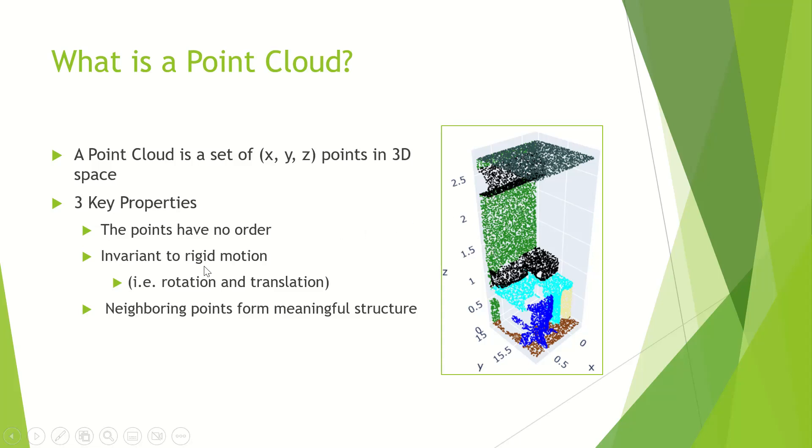Point clouds are also invariant to rigid motion. Rigid motion is just a rotation and/or a translation. If we rotate this point cloud right here, we still get the same structure. It's still a desk with a chair and a wall. If we translate it or move it across an axis, it's still the same. If we do both, it's still the same. The structure has not changed.